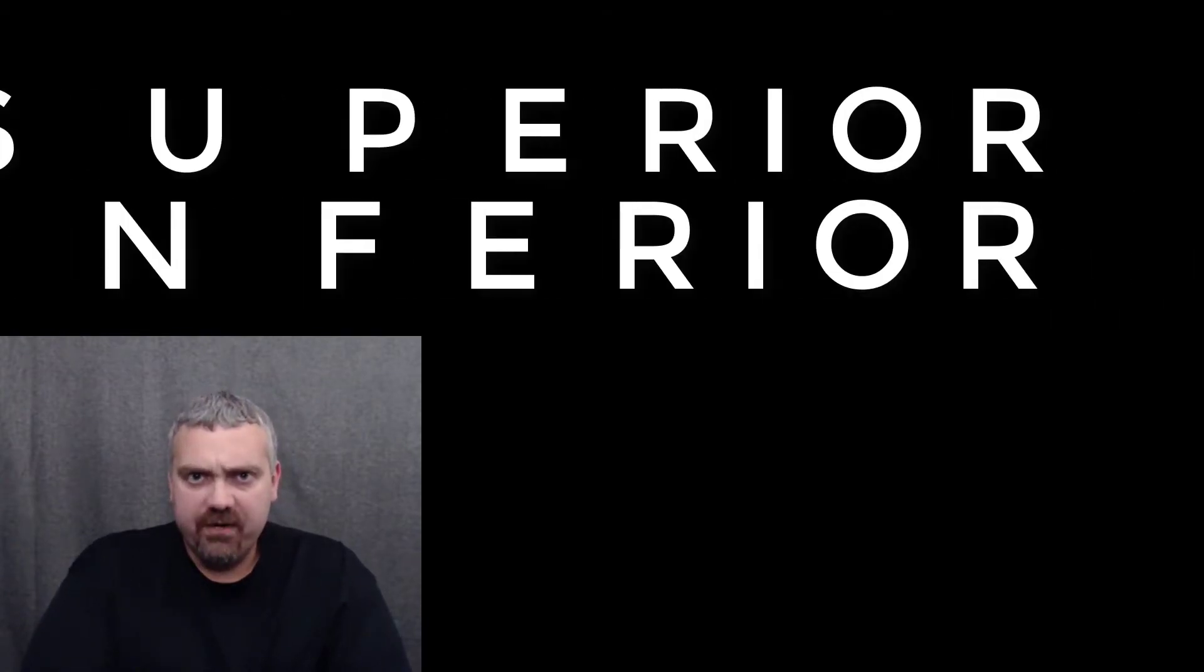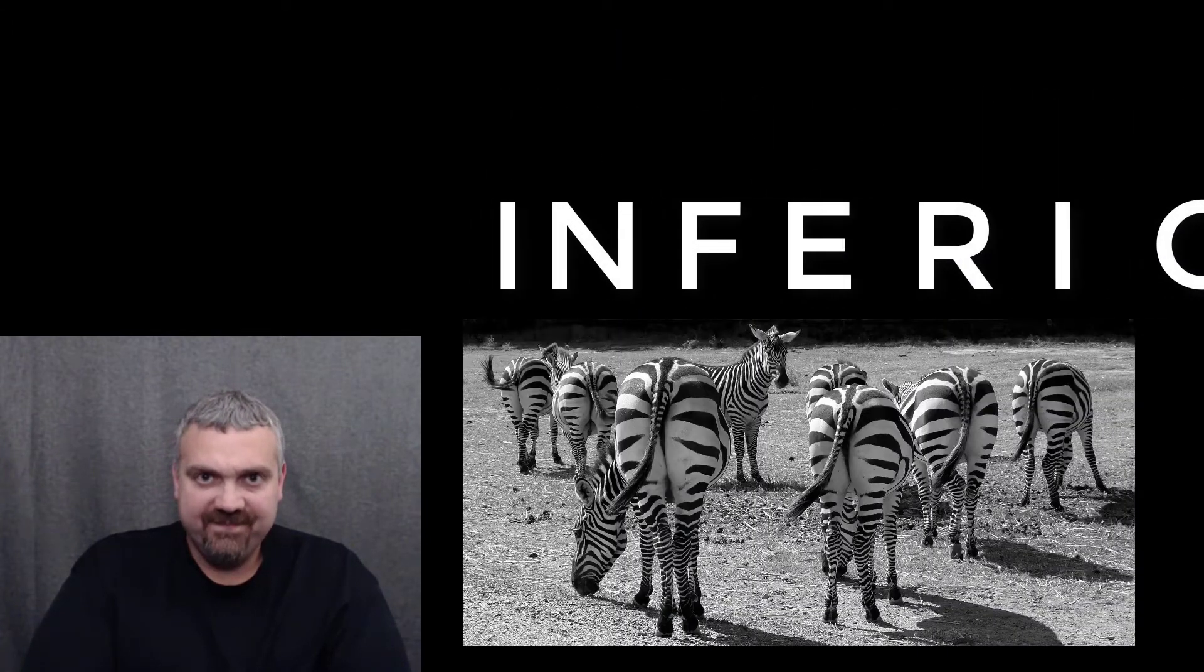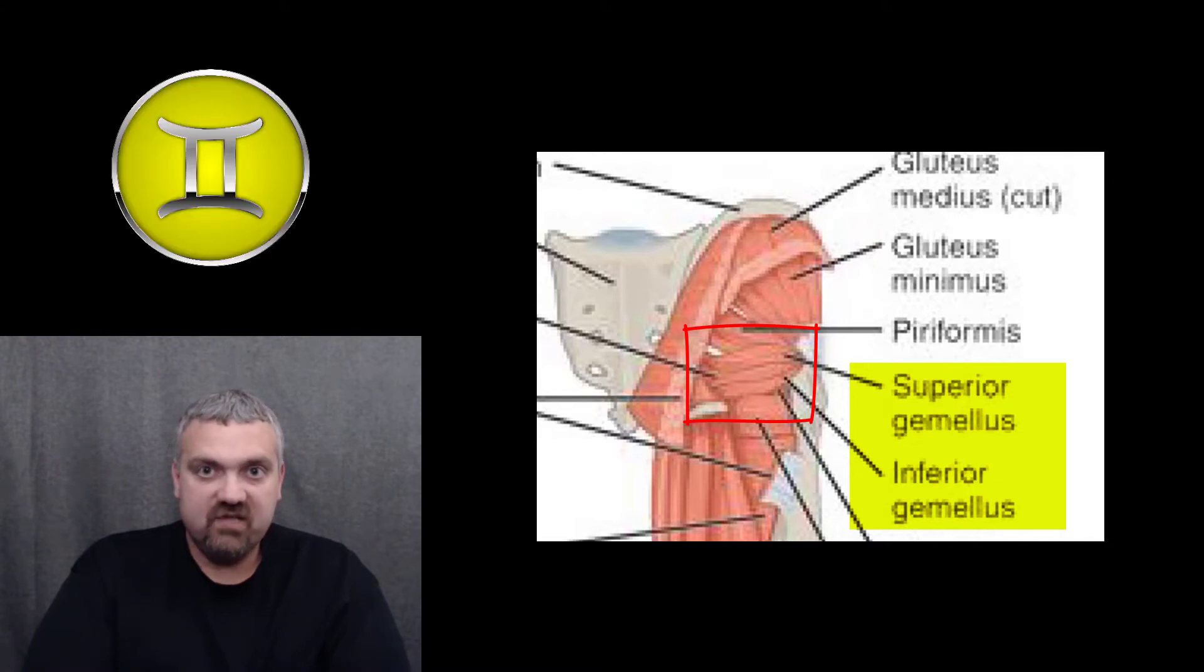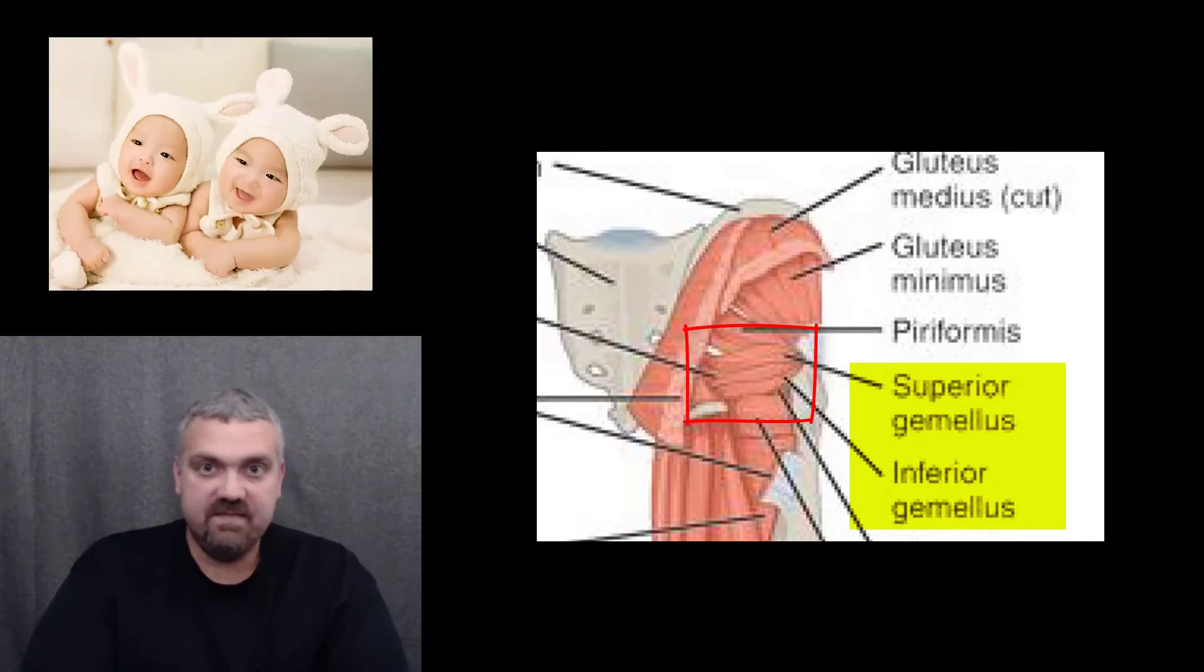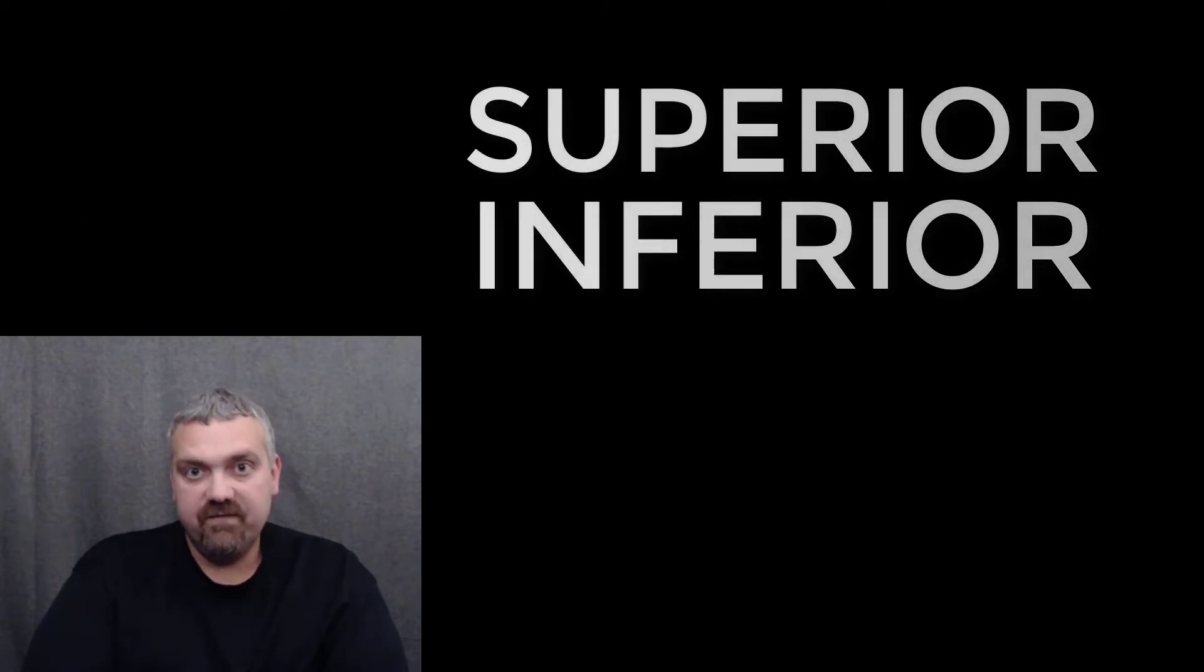Next, I want to compare superior and inferior. So superior means towards the top. Inferior means towards the bottom. So I picked a kind of fun example, the superior and inferior gemellus muscles. So gemellus, think gemini, think twins. So they're named this because they're twins. The superior gemellus muscle is above the inferior gemellus muscle. These muscles are considered lateral rotators of the hip. They're small muscles at the back of the pelvis that help to stabilize your hip and move your hip joint. So superior towards the top, inferior towards the bottom, and gemellus happens to mean twins.